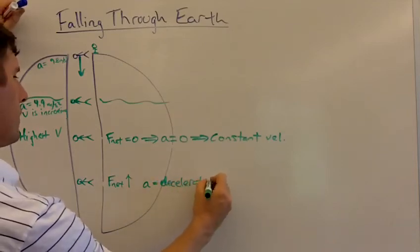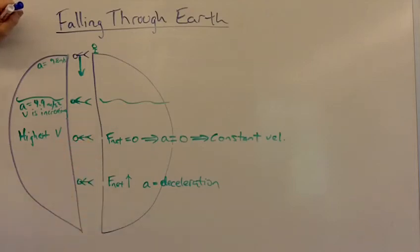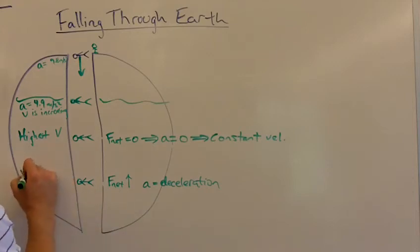Which means you're actually slowing down. You started with high velocity. The net force is up, which means you're getting slower and slower as you fall toward the other end of the shaft here. So your velocity then is decreasing, getting slower.